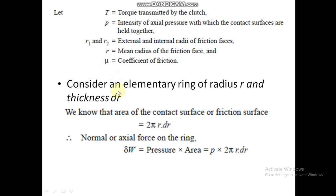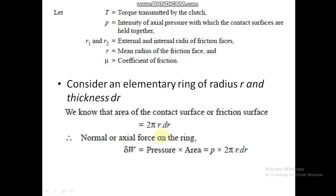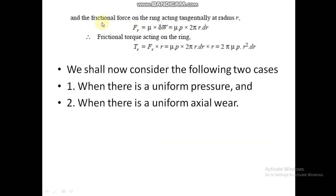Consider an elementary ring of radius r and thickness dr. The area of the contact or friction surfaces is 2πr·dr, where 2πr is the circumference and dr is the thickness. The normal or axial force on the ring, δW, is pressure multiplied by area. The friction force on the ring acting tangentially at radius r is obtained by multiplying the load by mu.